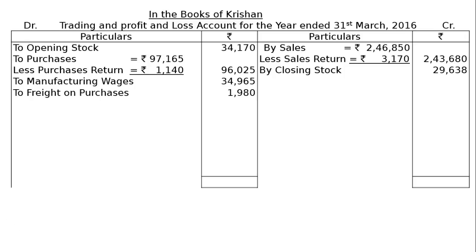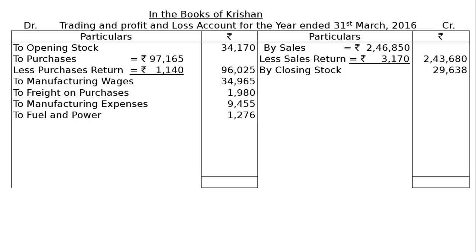To freight on purchases Rs. 1,980. Then to manufacturing expenses Rs. 9,455. To fuel and power Rs. 1,276. Next is to electricity (factory) Rs. 986, because this relates to the factory. Fuel and power is also not used in the office — it is used in the factory or in manufacturing.